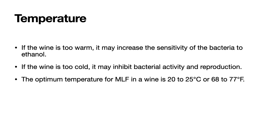Temperature is another factor that can affect malolactic fermentation. If the wine is too warm, it may increase the sensitivity of the bacteria to ethanol. If the wine is too cold, it may inhibit bacterial activity and reproduction, and the fermentation may go into a dormant period — which can happen if your barrels are in a cellar where it gets cold and may not warm up until springtime, preventing MLF from going to completion. The optimum temperature for MLF is between 20 and 25 degrees centigrade, or 68 to 77 degrees Fahrenheit.